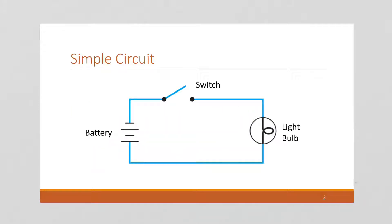This is a simple circuit. We've got a battery over here providing power and a light bulb over on this side. The light bulb is going to turn on if it has power coming from both sides, and that's only going to happen if this switch is closed.